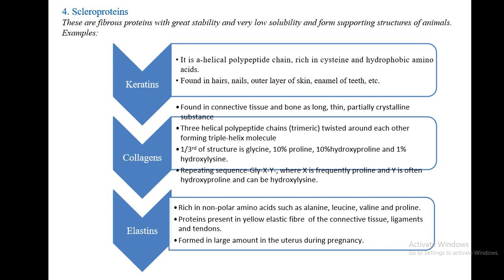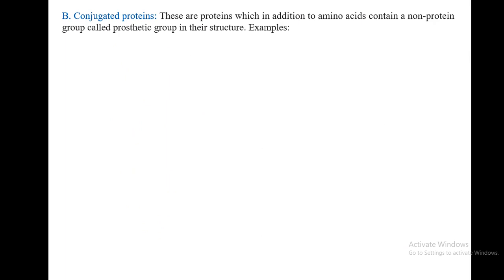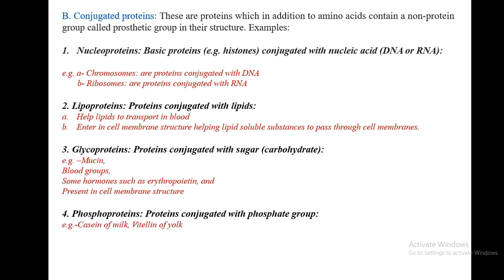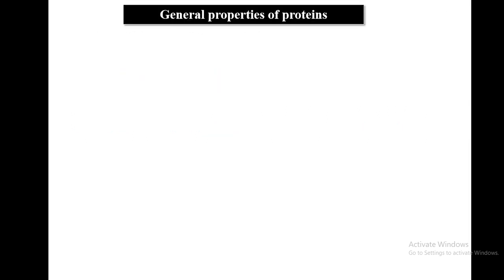Scleroproteins are fibrous proteins with greater stability and very low solubility, forming the supporting structures of animals. Examples are keratins, collagens, and elastins. Keratins are helical structures found in hair and nails. Collagens have a structure where one-third is glycine, with proline, hydroxyproline, and approximately 1% hydroxylysine. Elastins are very rich in non-polar amino acids, present in connective tissue, ligaments, and tendons, and formed in large amounts in the uterus during pregnancy. Conjugated proteins contain non-protein groups called prosthetic groups — examples include nucleoproteins, lipoproteins, glycoproteins, and phosphoproteins.